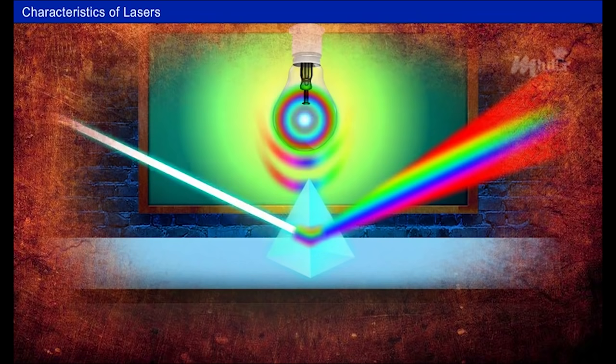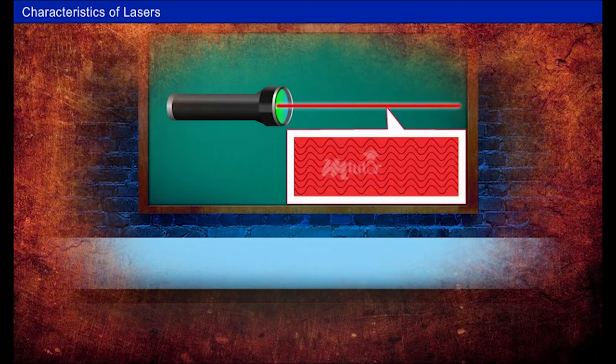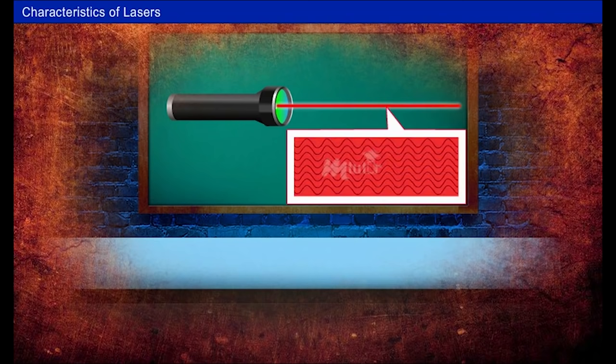The laser is highly coherent, meaning the wavelength of the laser light is in phase in space and time. This is because of the orderly electronic transitions that take place in laser.